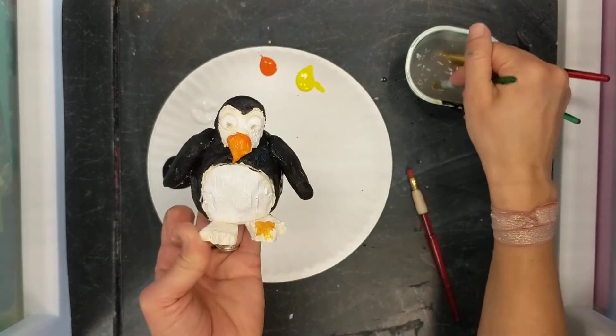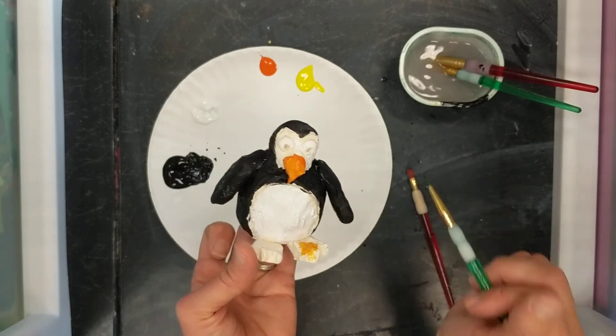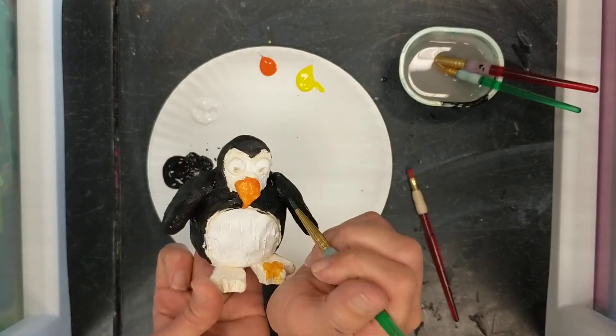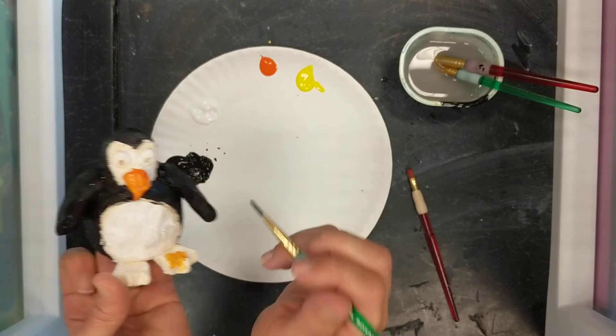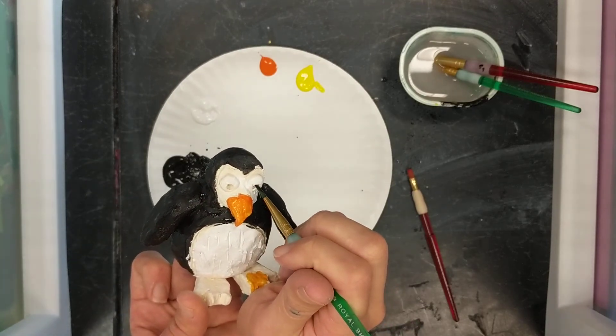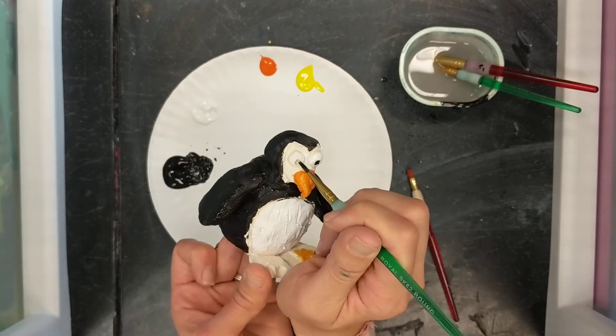And you can see how I'm building up. Now my eyes of my penguin look kind of hollow without the pupil. So I'm going to very carefully take some black and I'm going to paint the inside of my eyes of my penguin.